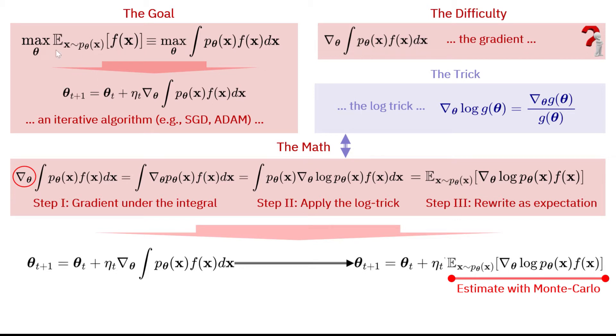So now, if I just expand this expectation, I know that I could write the expectation as the integral of p theta of x f of x dx. Of course, we will apply an iterative algorithm like stochastic gradient descent or ADAM to optimize this problem. And that requires us to execute a form of update that looks like the new parameter value is the old parameter value plus eta t, which is a learning rate, times the gradient of this expectation of our loss function, which is given here as the integral of p theta of x f of x dx.